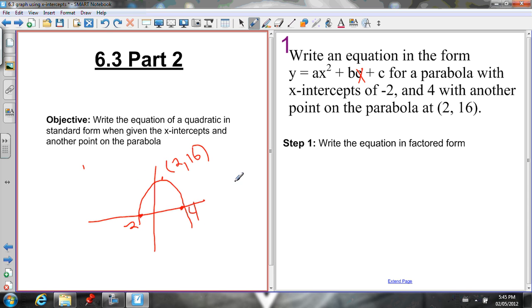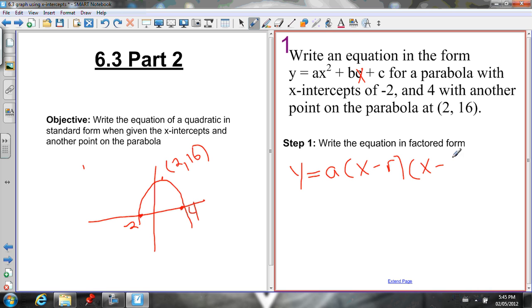We know how to do that. We're given x-intercepts and a point. The way we're going to write it in standard form is by first writing in factored form. If we remember back from chapter 4, factored form is y equals a times (x minus r) times (x minus s). So we have all the necessary information to write this in factored form except for the value of a, but we can solve for that. The x-intercepts are the r and s values.